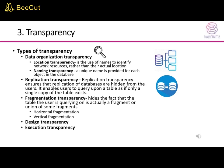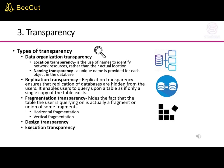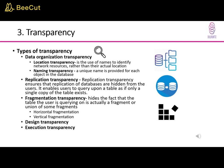Fragmentation transparency hides the fact that the table the user is querying is actually a fragment or union of some fragments. It consists of two types: horizontal fragmentation and vertical fragmentation. There is also design transparency and execution transparency.